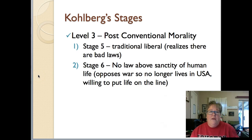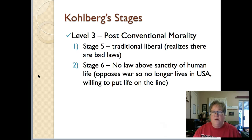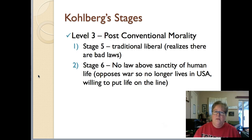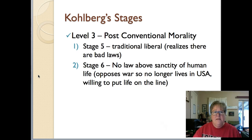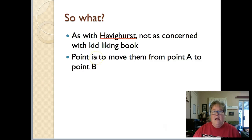Level three is post-conventional morality. Stage five — the traditional liberal dilemma — is where the person, typically an older child or adult, realizes that there are bad laws or rules and thinks about how to get around them. Stage six is where the person solves the dilemma with the belief that no law supersedes the sanctity of human life — for example, someone who opposed the Vietnam War and left the United States to avoid it, willing to put their life on the line for their belief system.